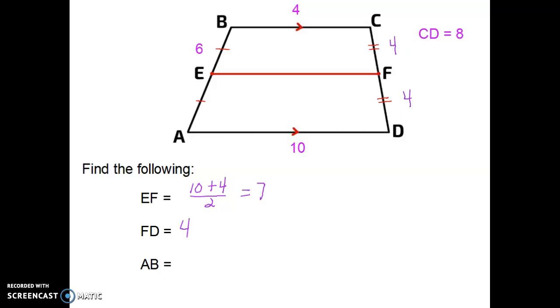Now my last segment is segment AB, which is off to the left here. Segment EA would also have to be 6. So using segment addition, the length of segment AB would equal 12.